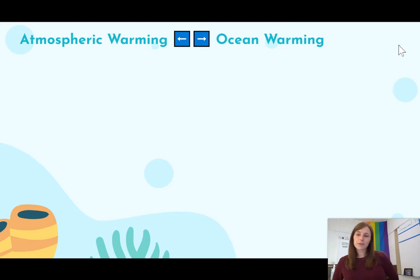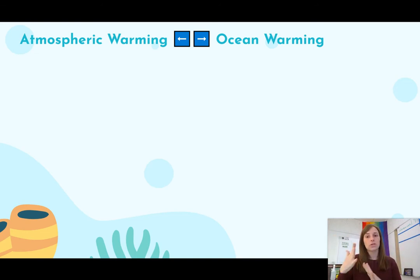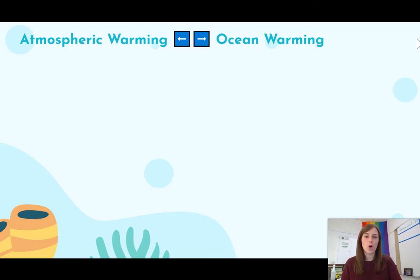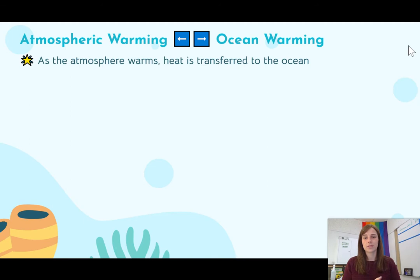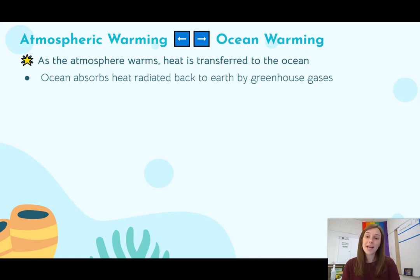Let's first talk about the idea of atmospheric warming versus ocean warming. In some of our past notes we have talked about reasons why we are getting atmospheric warming, and I want to make sure you're aware that when the atmosphere warms, this also means that the ocean warms. It happens at the same time because as the atmosphere warms, that heat is transferred to the ocean. The ocean is going to absorb the heat that is radiated back to Earth by the greenhouse gases.